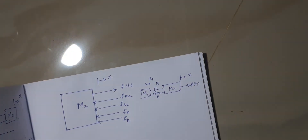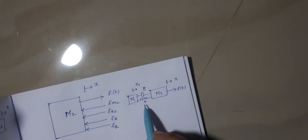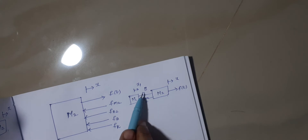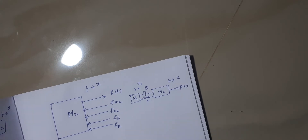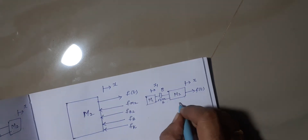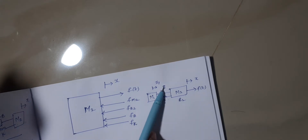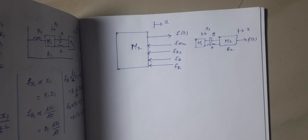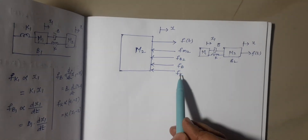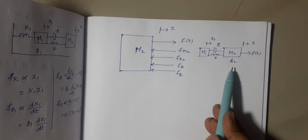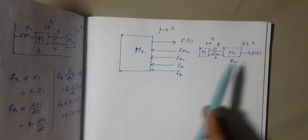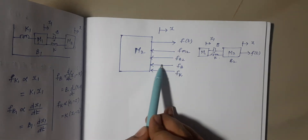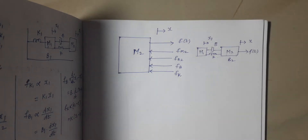Now we are going to draw the free body diagram of mass m2. Count the number of elements connected to mass m2 — there are 1, 2, 3, 4 elements. I had missed b2 earlier, so count again: 4 elements. Apart from these four forces there will be an opposing force produced by mass m2. The forces are: fm2 (opposing force by m2), fb2, fb, fk, and f(t) is the applied force. Note that the opposing force is always opposite in direction to the applied force.